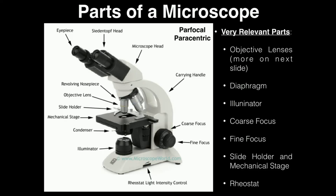The last thing, which has a long name, is the rheostat light intensity control — we just call it the rheostat. This really just controls how much light there is, with settings from about one to ten. At low settings it'll be low light, and at high settings it'll be high amounts of light. This is very similar to the diaphragm in the sense that you just need to play around with it to get to a point where you can see the specimen. There's no set rule for what setting it has to be on.